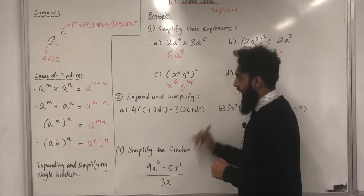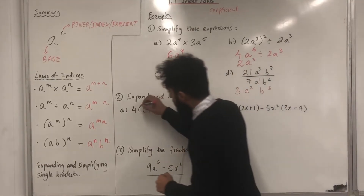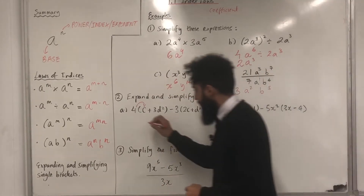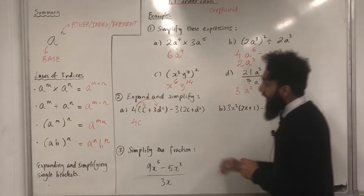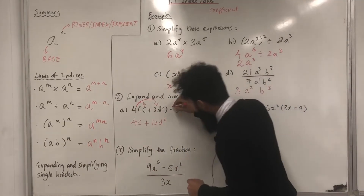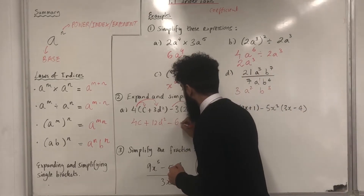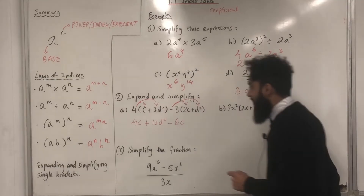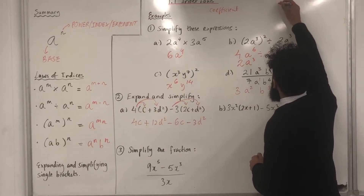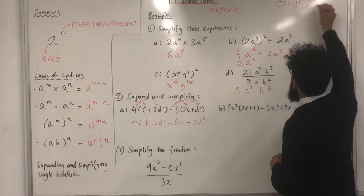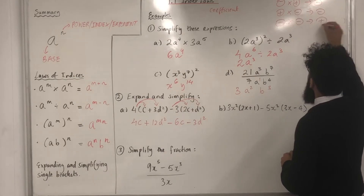Example 2: expand and simplify parts A and B. Starting with part A, expanding the single bracket: 4 multiplied by C gives 4C. Then 4 multiplied by positive 3D squared gives positive 12D squared. Minus 3 multiplied by 2C gives minus 6C. Minus 3 multiplied by positive D squared gives minus 3D squared. A quick recap: negative times positive gives negative; positive times negative gives negative; two negatives multiplied together give a positive.